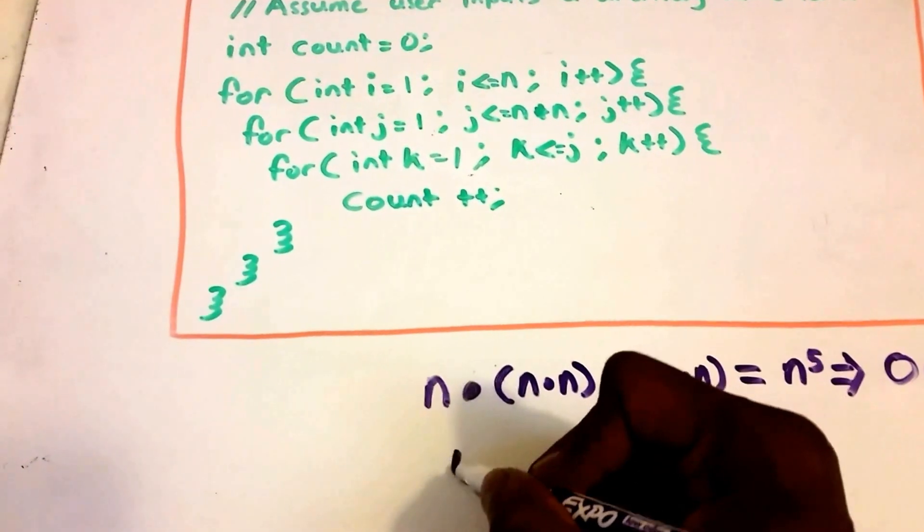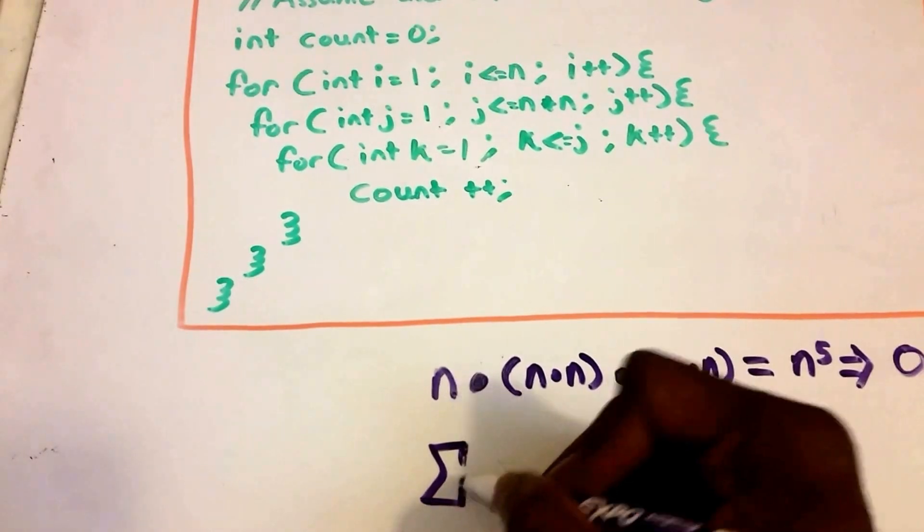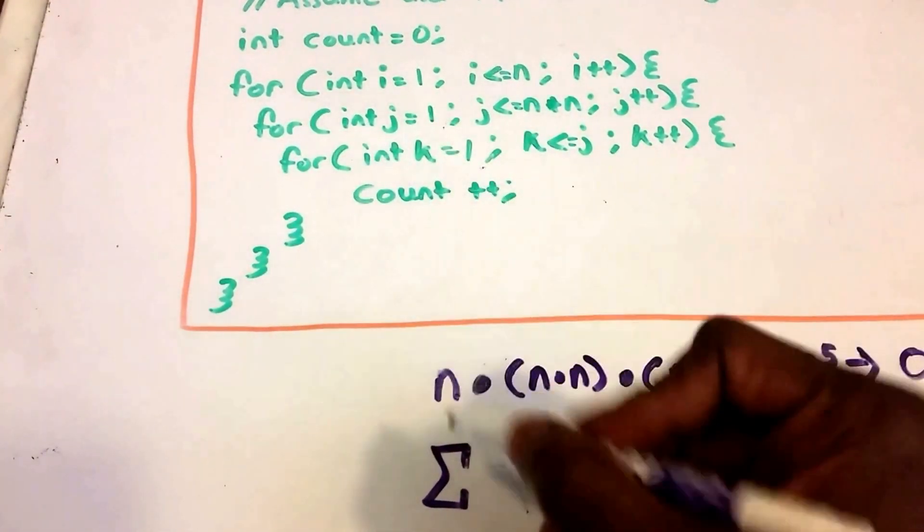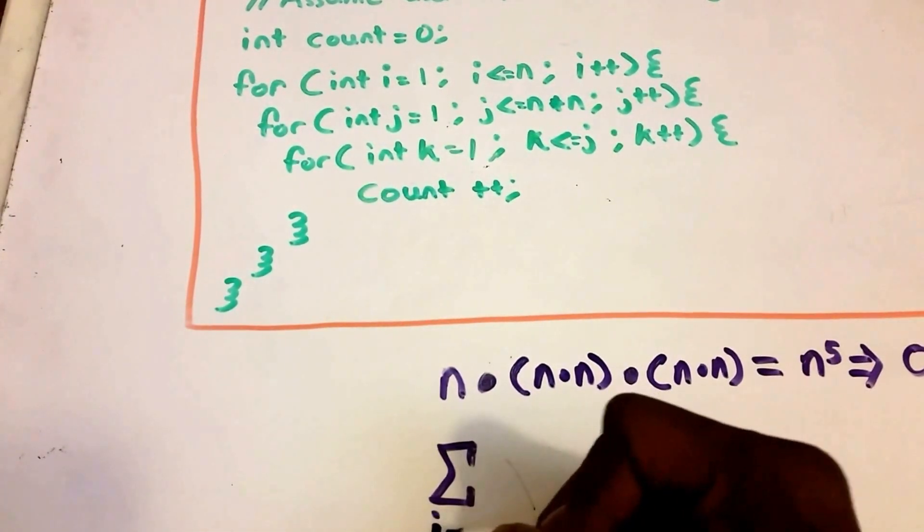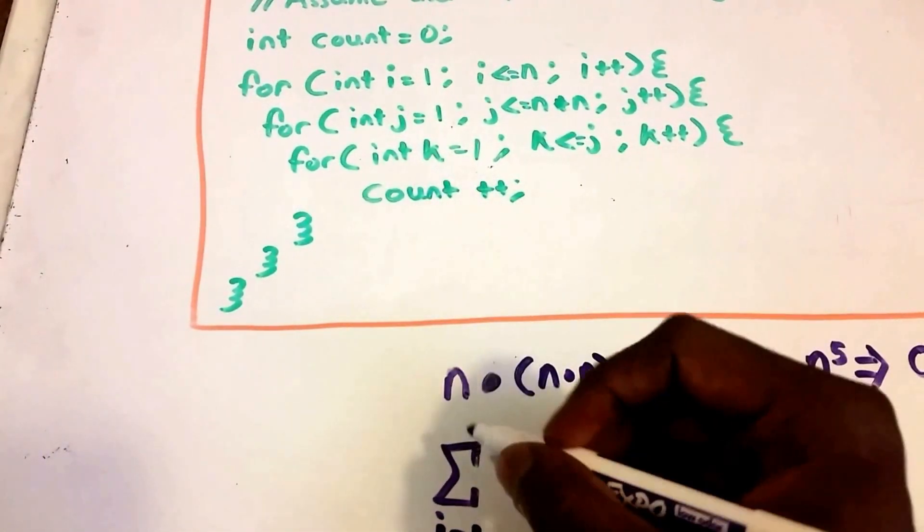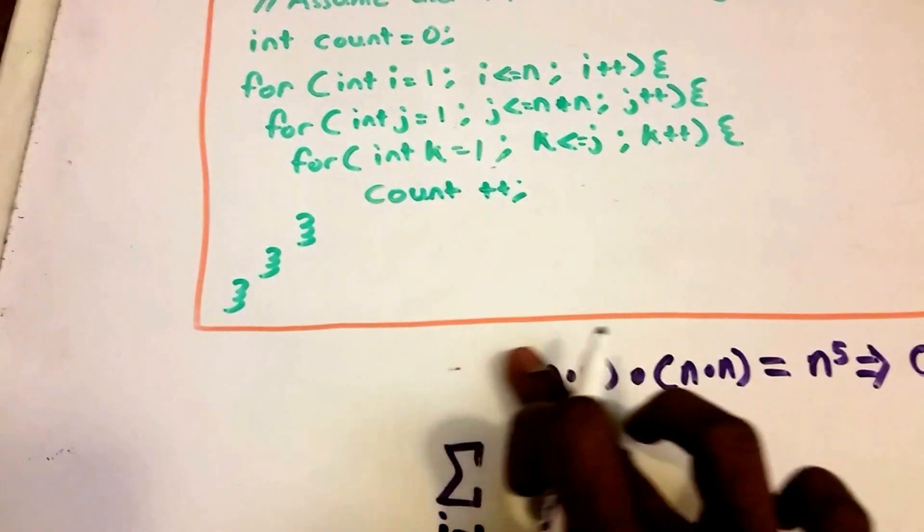We could do that using summations. What we see is our first loop runs from i equals one, so I'm gonna put summation from i equals one all the way up to n.